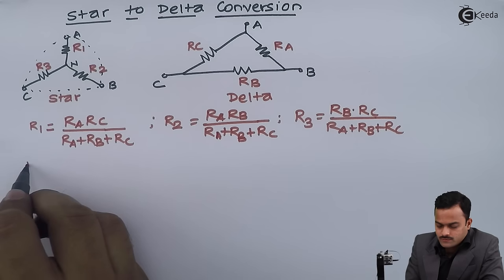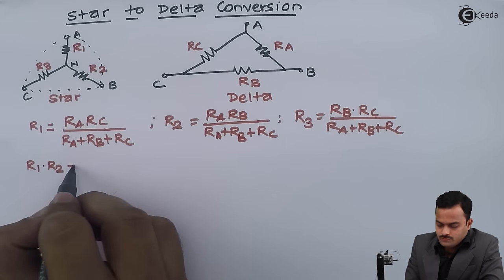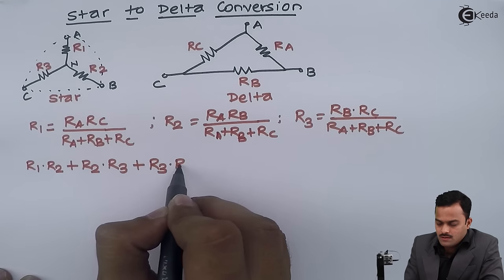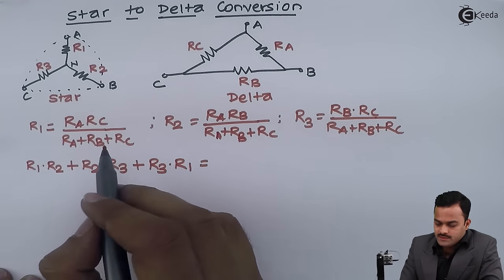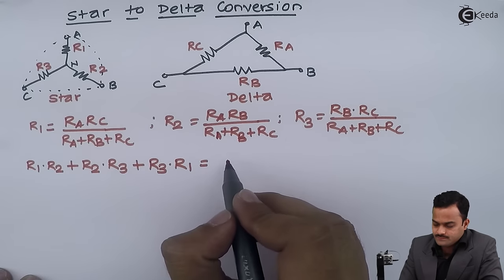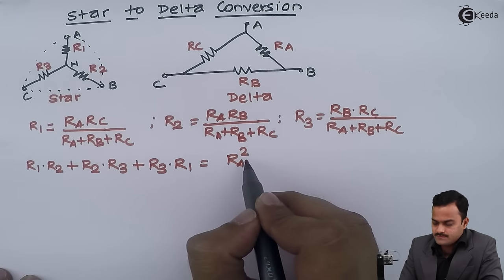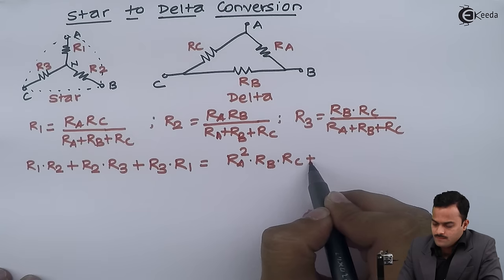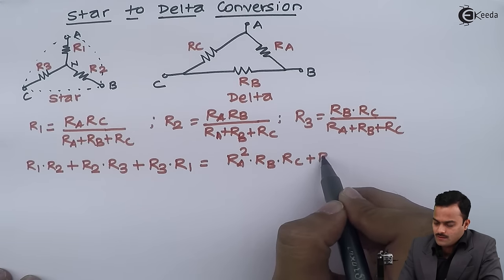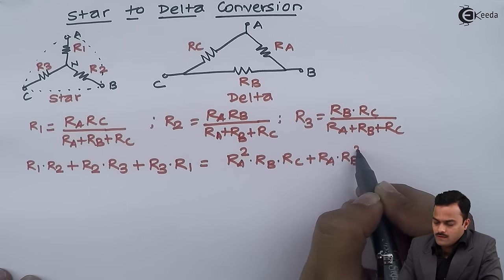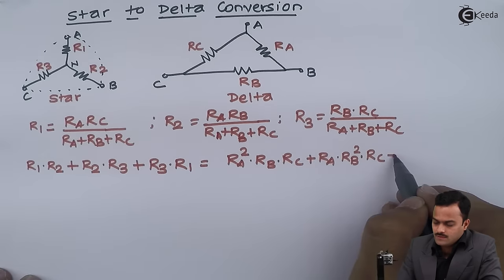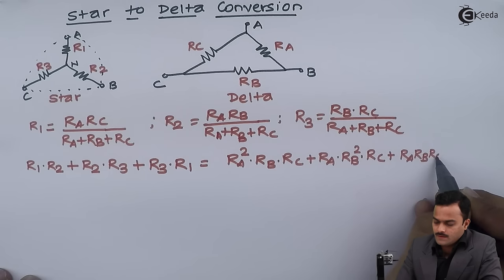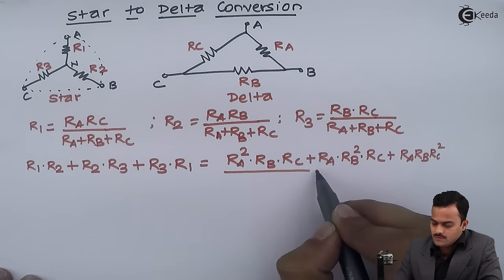Let us find out what is R1·R2 plus R2·R3 plus R3·R1. Multiplying these values I will get RA²·RB·RC, plus R2·R3 will give me RA·RB²·RC, plus R3·R1 will give me RA·RB·RC², all divided by RA plus RB plus RC, the whole square.